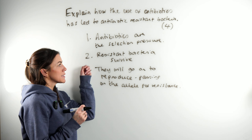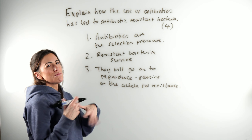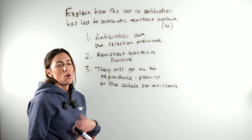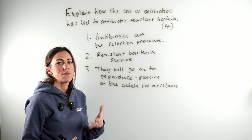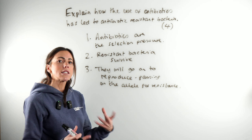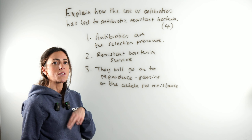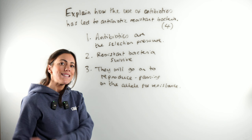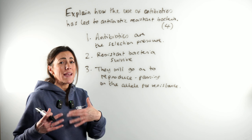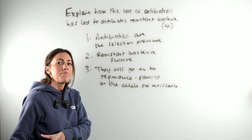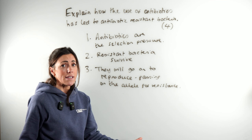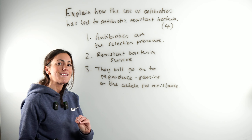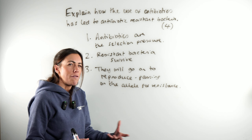Something important to highlight: don't say that the antibiotic causes the bacteria to mutate. Mutations happen randomly — they are spontaneous. The presence of the antibiotic does not cause the mutation. The antibiotic just gives the bacteria that are resistant an advantage, because it kills all the non-resistant bacteria, allowing the resistant bacteria to survive with far less competition. But the mutation that causes the resistance is random, not as a result of the antibiotic.